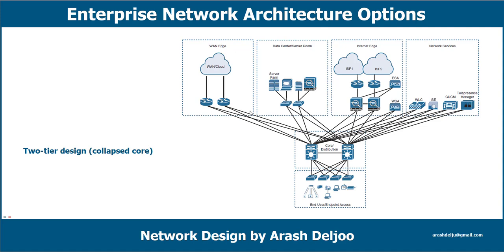In this design, end users and endpoints can access each other, and then access the WAN edge — meaning they can connect to remote data centers, remote branches, other campus networks, or for cloud connectivity to cloud providers such as Amazon Web Services, Microsoft Azure, and Google Cloud Platform.